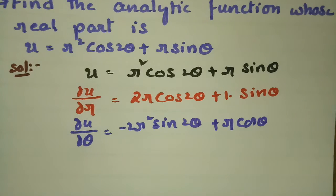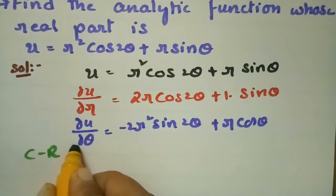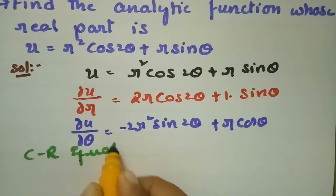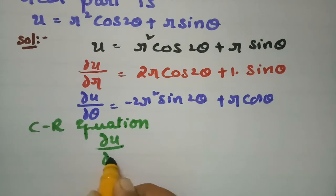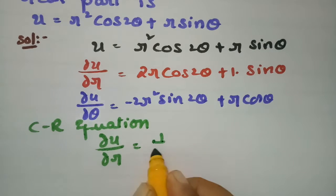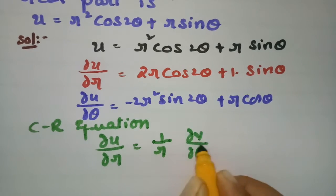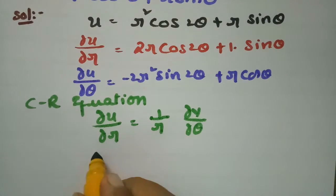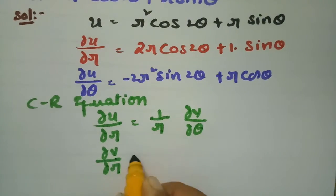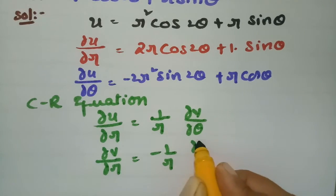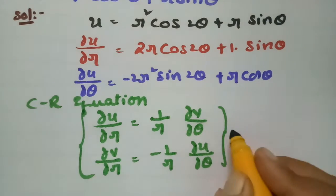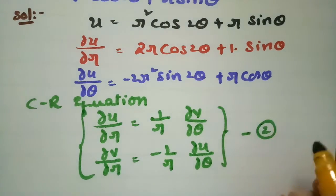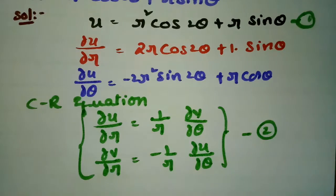Now according to the CR equations in polar coordinates: ∂u/∂r = (1/r)(∂v/∂θ) — this is equation 1 — and ∂v/∂r = -(1/r)(∂u/∂θ) — this is equation 2. These two are the Cauchy-Riemann equations in polar form.